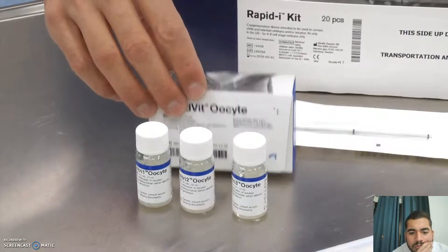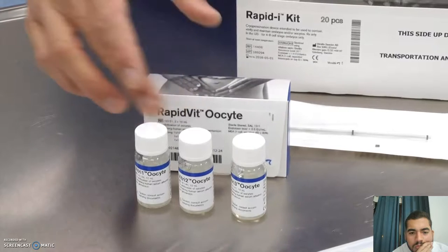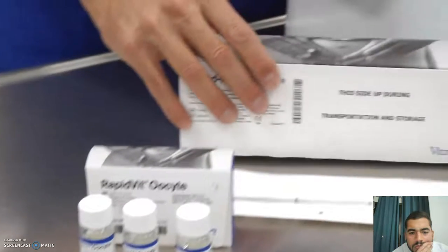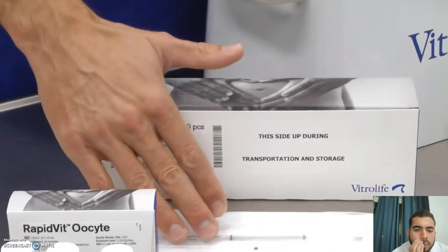I would now like to demonstrate how to do oocyte vitrification, making use of RapidVit oocyte and RapidWarm oocyte, as well as the equipment needed for the procedure. For oocyte vitrification, you will need the oocyte vitrification kit which consists of three solutions, the RapidEye straw and device to load the oocytes on.